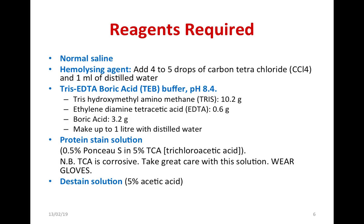The reagents required are: normal cell line, a hemolyzing agent (carbon tetrachloride), and distilled water. The buffer used is Tris-EDTA-Boric acid buffer, called TBE buffer, at pH 8.4 — made with Tris 10.2 g, EDTA 0.6 g, and boric acid 3.6 g made up to one liter. For staining proteins, use 0.5% Ponceau S stain dissolved in 5% TCA. Note: TCA is corrosive, so wear gloves. The destaining solution is 5% acetic acid in methanol.